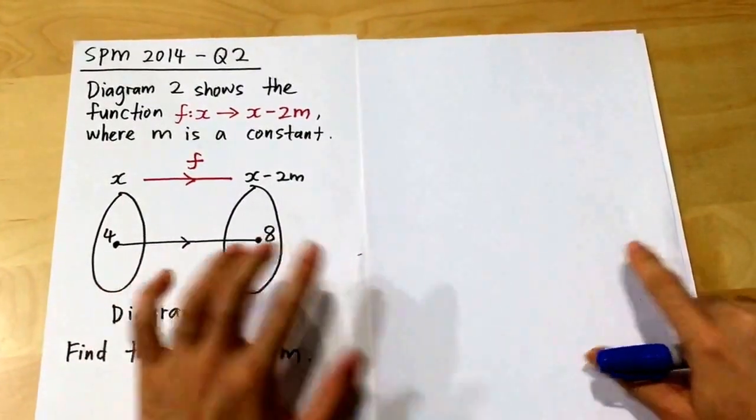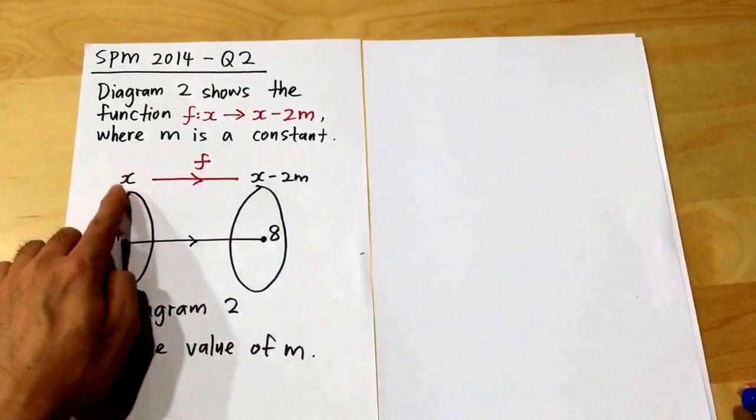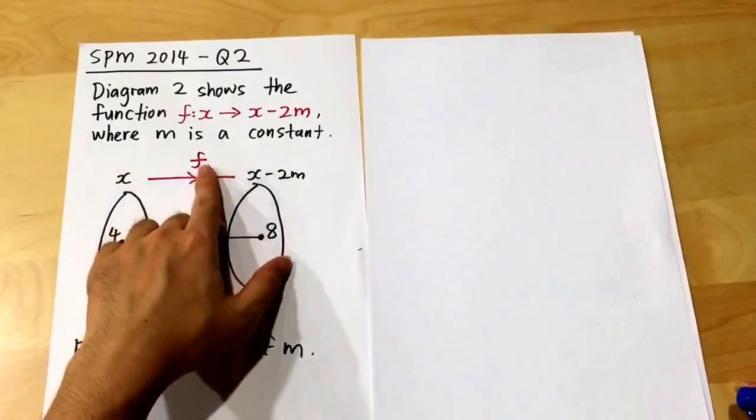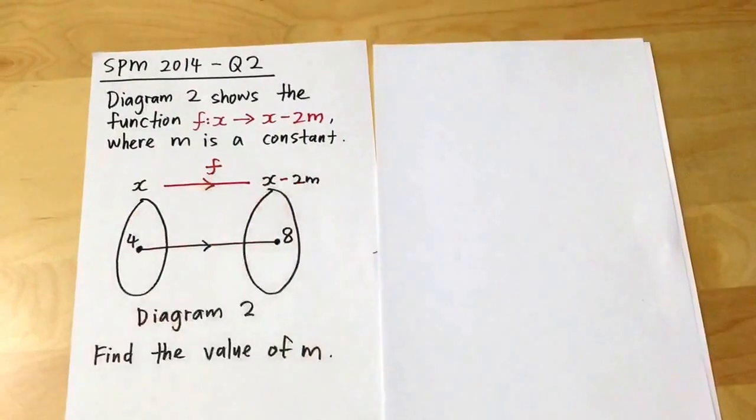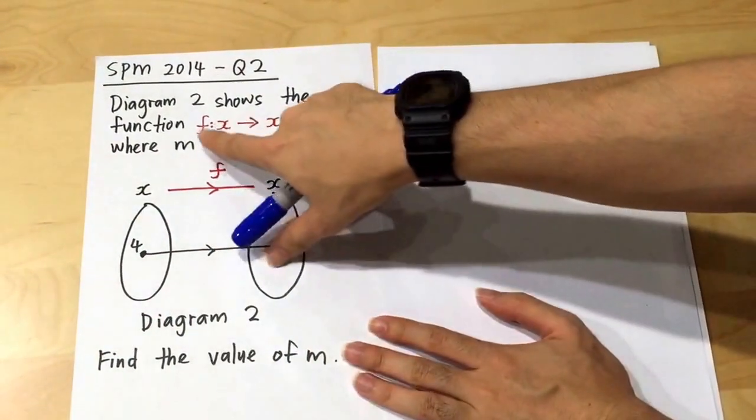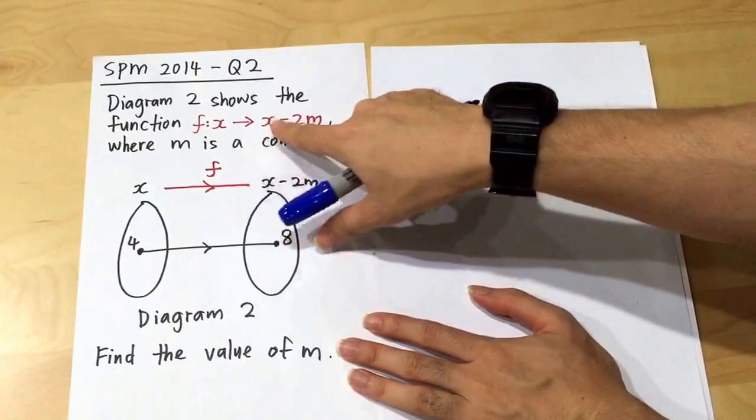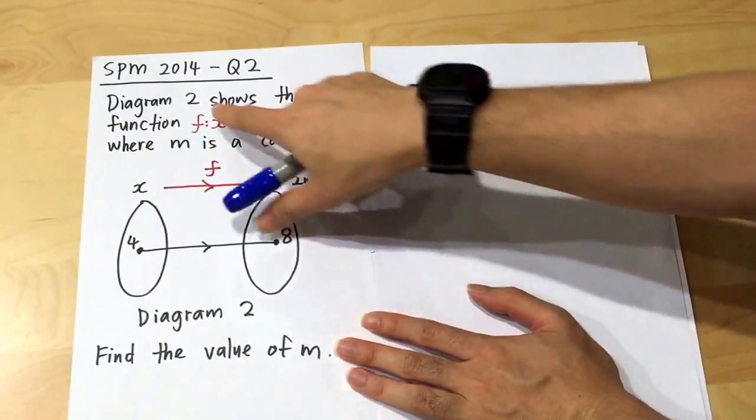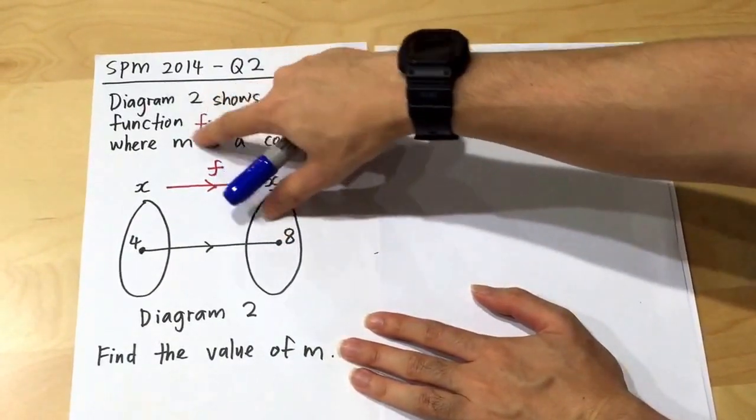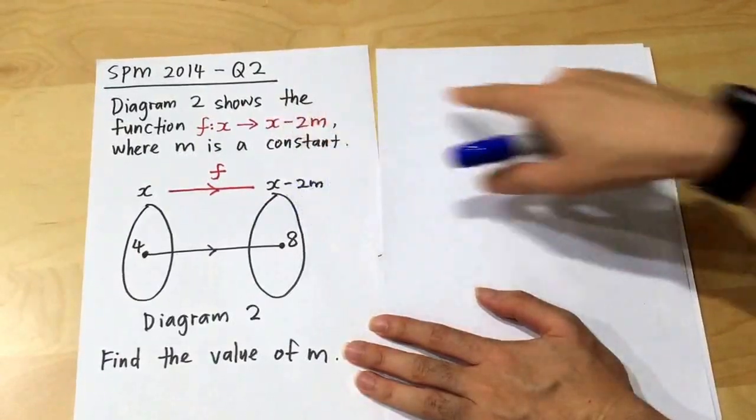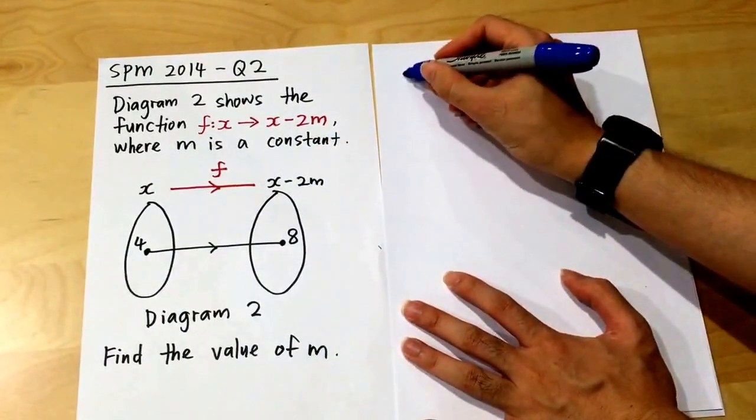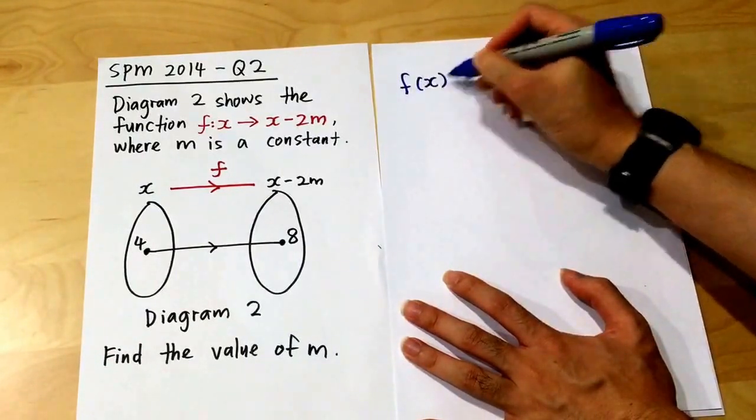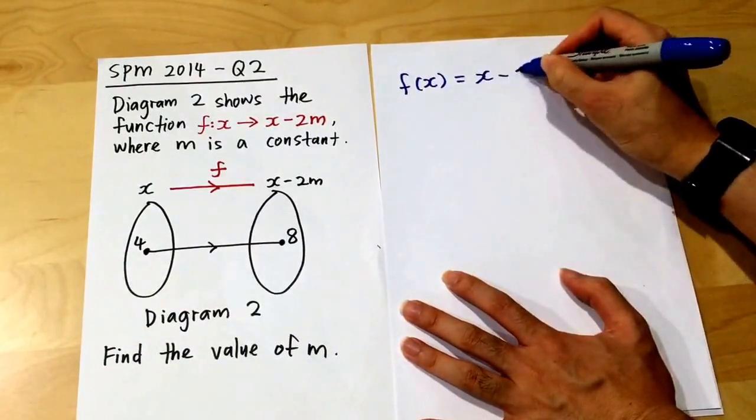First thing is, when the x passes through the function f, it will become x minus 2m. This is why we call fx equals x minus 2m. This equation is very important. If I solve this question, first thing is, I will write it down: fx equals to x minus 2m.